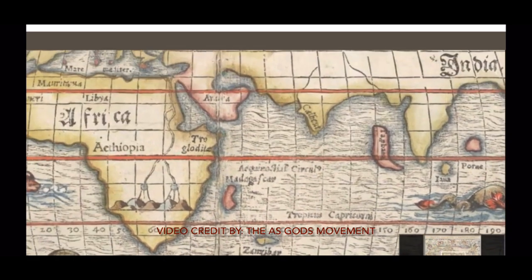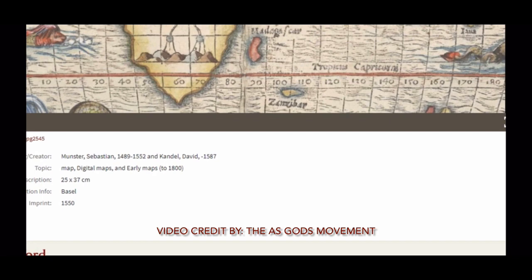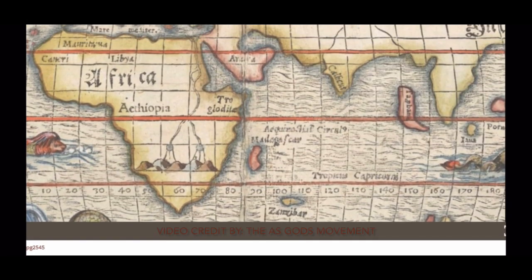Have a quick look at how these maps are constructed from back then. This guy's name is Sebastian Munster. He drew this map — he and David Kandel drew this map between 1489 and 1552. This map was imprinted in 1550.